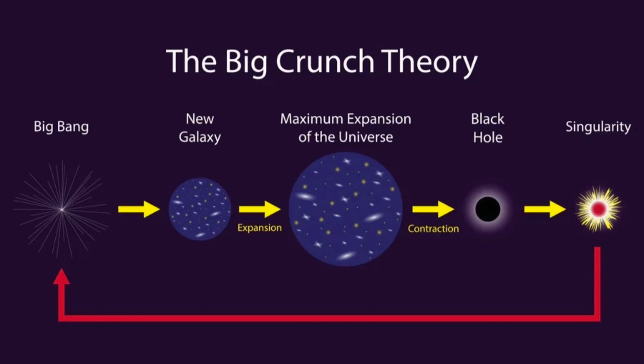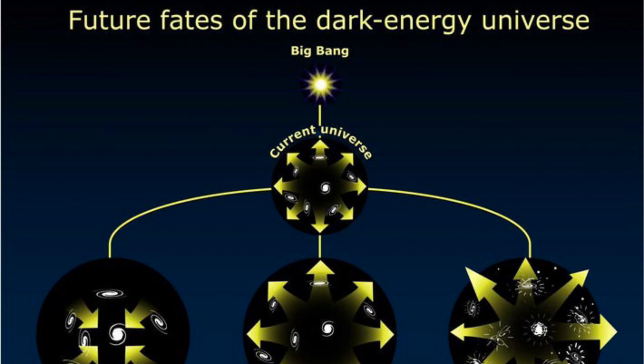On the other hand, if the amount of dark energy is not sufficient, the expansion of the universe could eventually slow down and reverse, leading to a big crunch scenario in which the universe collapses back in on itself.